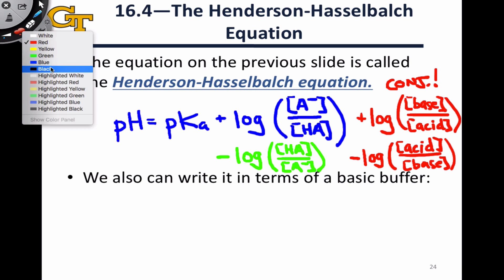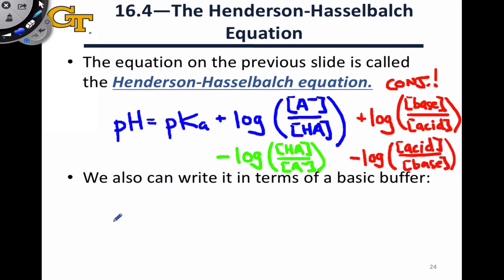We can also write the Henderson-Hasselbalch equation in terms of a basic buffer and pOH, and in that case pOH is equal not to the pKa but to the pKb plus the log of the acid concentration, now HB+, divided by the base concentration, B.